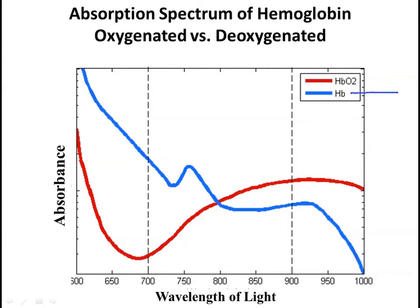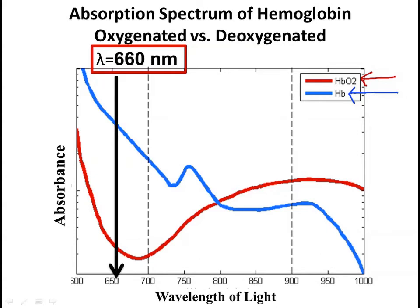First, we need to look at a portion of the absorption spectrum for deoxygenated hemoglobin, which is shown here in blue, and compare that with the absorption spectrum for oxygenated hemoglobin, which is shown here in red. Now remember back in the spectrophotometry tutorial, one of the experimental tips for the curve experiment in this lab was to use a wavelength of 660 nanometers on the spectrophotometer. What you can see is that the deoxygenated hemoglobin here in blue absorbs more light at 660 nanometers than does the oxygenated hemoglobin shown here in red.